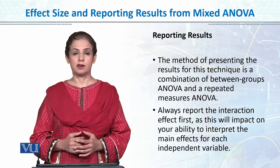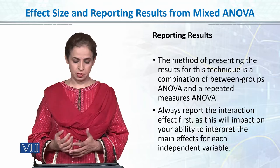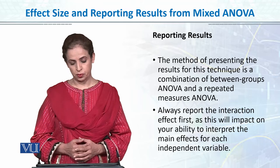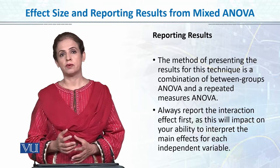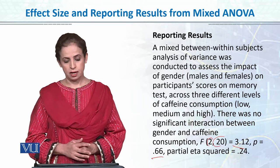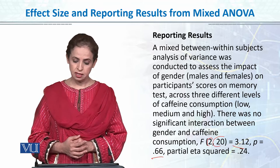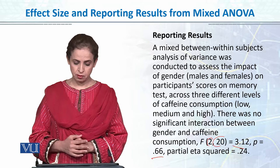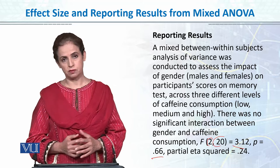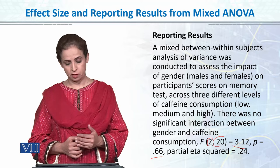The next is reporting the results, and we have talked about this many times — t-test, one-way ANOVA, two-way ANOVA independent or repeated. Similarly, the method of presenting the results of this technique is a combination of between-group and within-group ANOVA. We always report the interaction effect first and then the main effects. So: a mixed between-within subjects analysis of variance was conducted to assess the impact of gender on participants' scores on memory across three different levels of caffeine consumption — low, medium, and high.